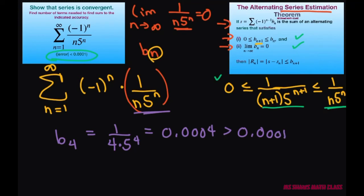Now, let's look at b sub 5. That's going to be 1 divided by 5 times 5 to the 5th power. That equals 0.000064, which is less than 0.001.